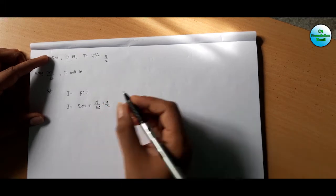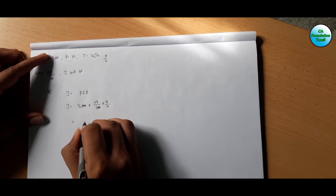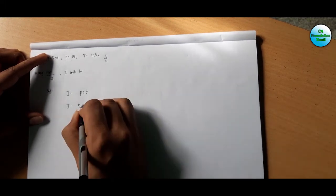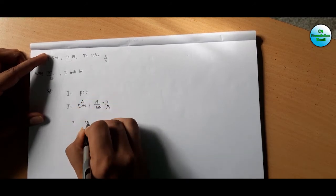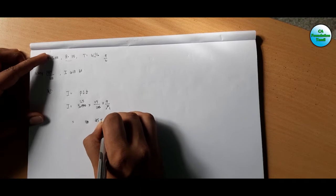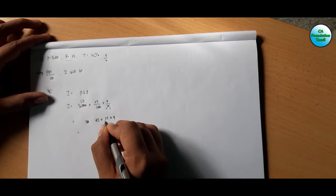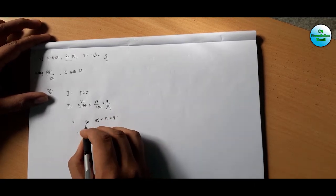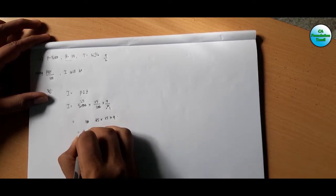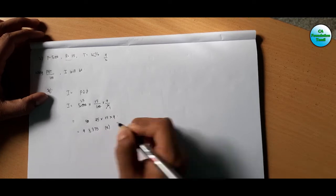Rate of interest is 15 divided by 100. Cancelling: 50 divided to get 25 into 15 into 9 = 3,375. So the simple interest is ₹3,375. The second sum answer is Option A.